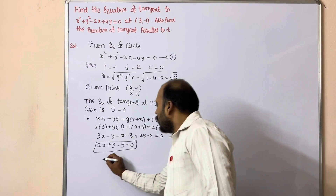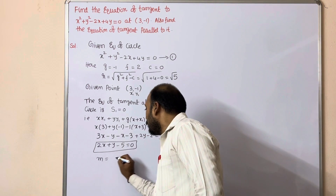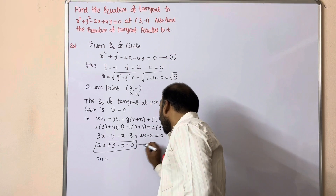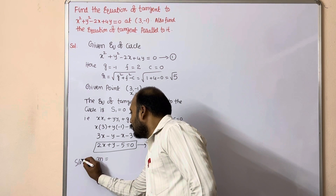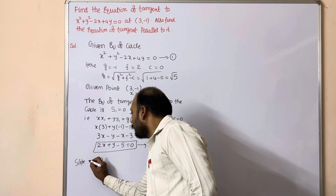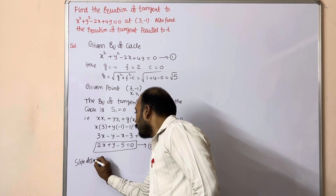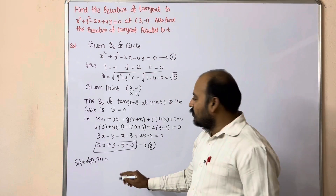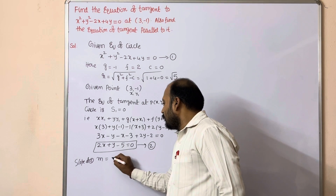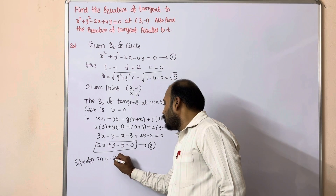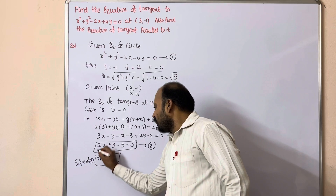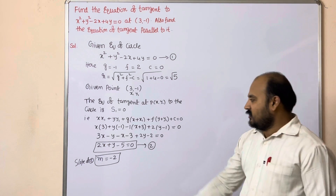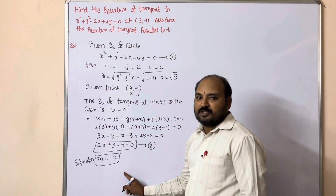For this equation 2, we calculate the slope. The slope m equals minus the x-coefficient divided by the y-coefficient, so m = -2/1 = -2.